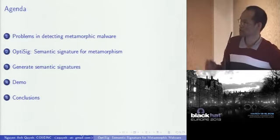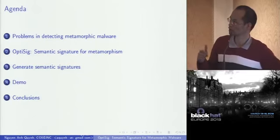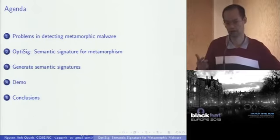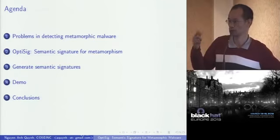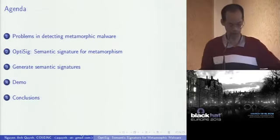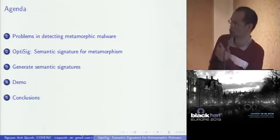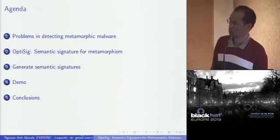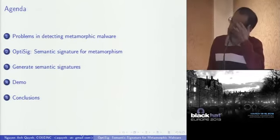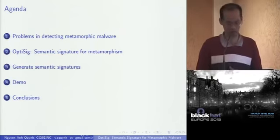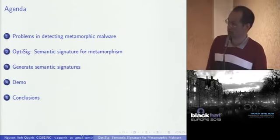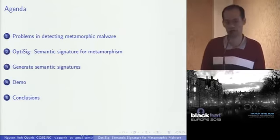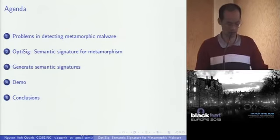In this talk, I will first introduce the problems with the current antivirus and why they have so many problems detecting metamorphic malware. After that, I'll introduce OPTISIG and the concept of semantic signatures and how it can be used to detect metamorphics. Next, I will explain how OPTISIG can generate the semantic signatures, and I have some live demo, and a conclusion at the end.